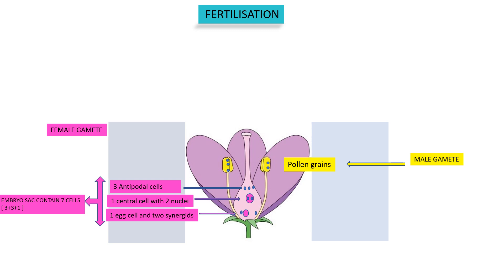The mature pollen grains get released from the anther of the male part. There are many pollen grains in the air, and we are compelled to think: what would happen if the pollen grain of another species lands on the stigma? Nature is complete in itself and well planned. The stigma recognizes that the pollen grain is of another species, does not allow it to enter, and that pollen grain is disintegrated.